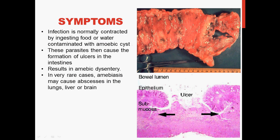Symptoms of amoebiasis: infection is normally contracted by ingesting food or water contaminated with amoebic cysts. These parasites then cause the formation of ulcers in the intestines. This is a histological representation of an ulcer in which part of the mucosal area has been sloughed off. This results in amoebic dysentery, which is inflammation of the intestines caused by a parasite — in this case, Entamoeba histolytica.